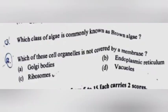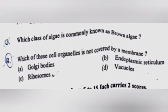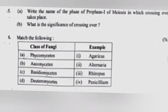Question 3: Which class of algae is commonly known as brown algae? Answer: Phaeophyceae. Question 4: Which of these cell organelles is not covered by a membrane? A) Golgi bodies, B) Endoplasmic reticulum, C) Ribosome, D) Vacuoles. Answer: C, Ribosome.